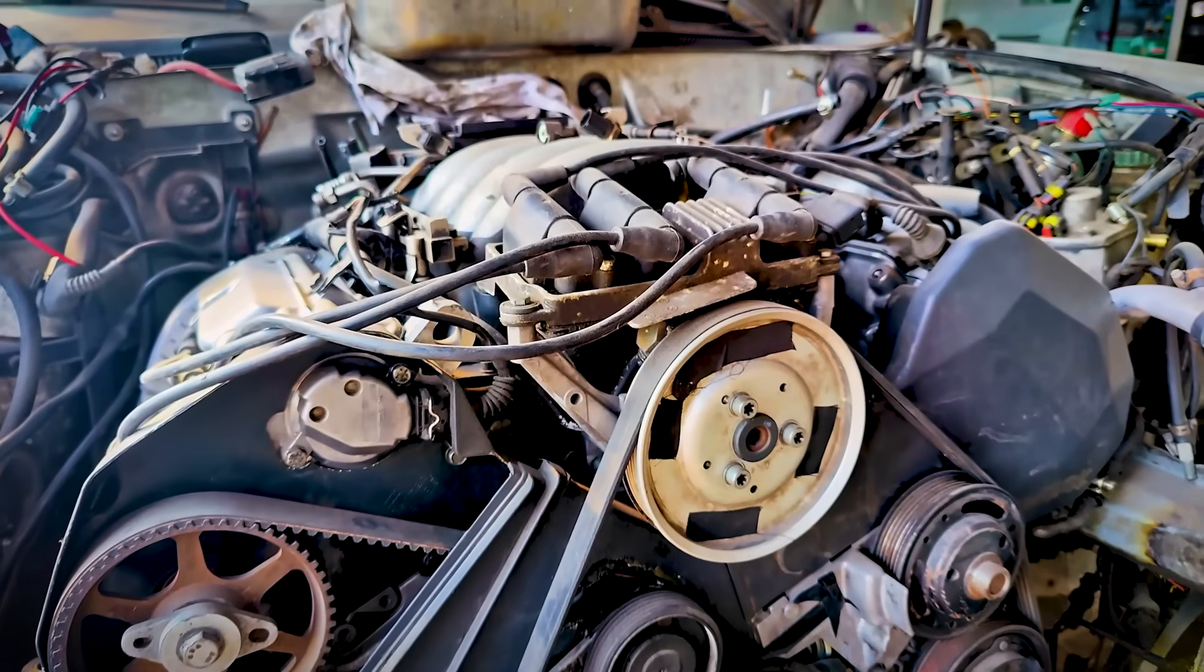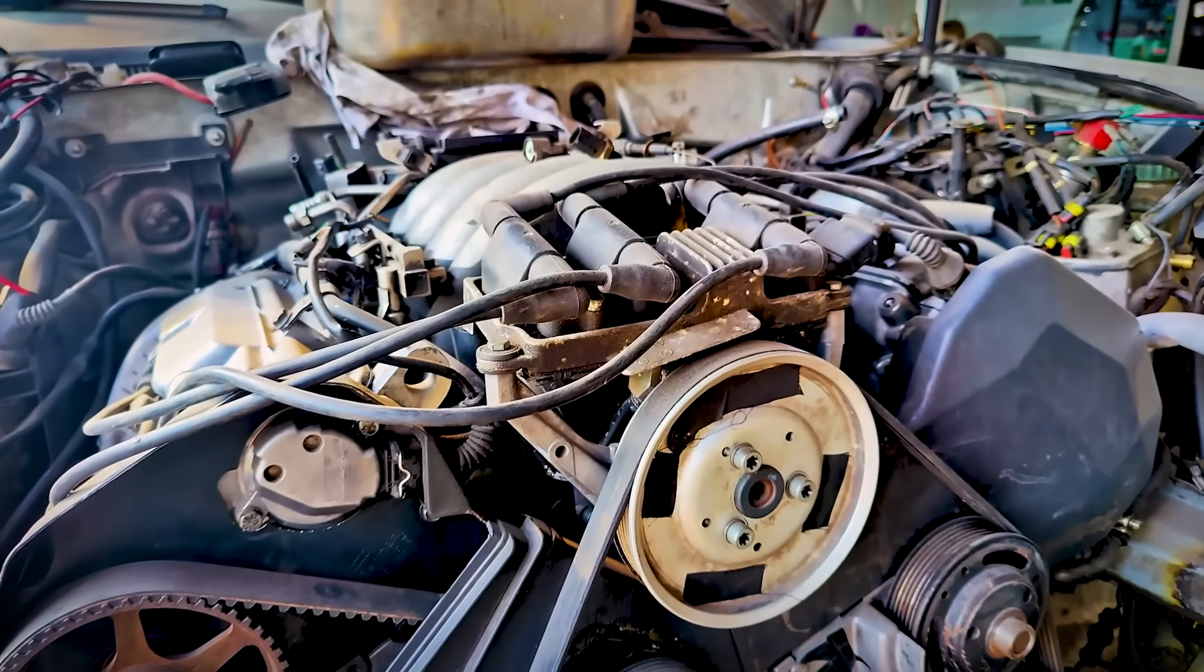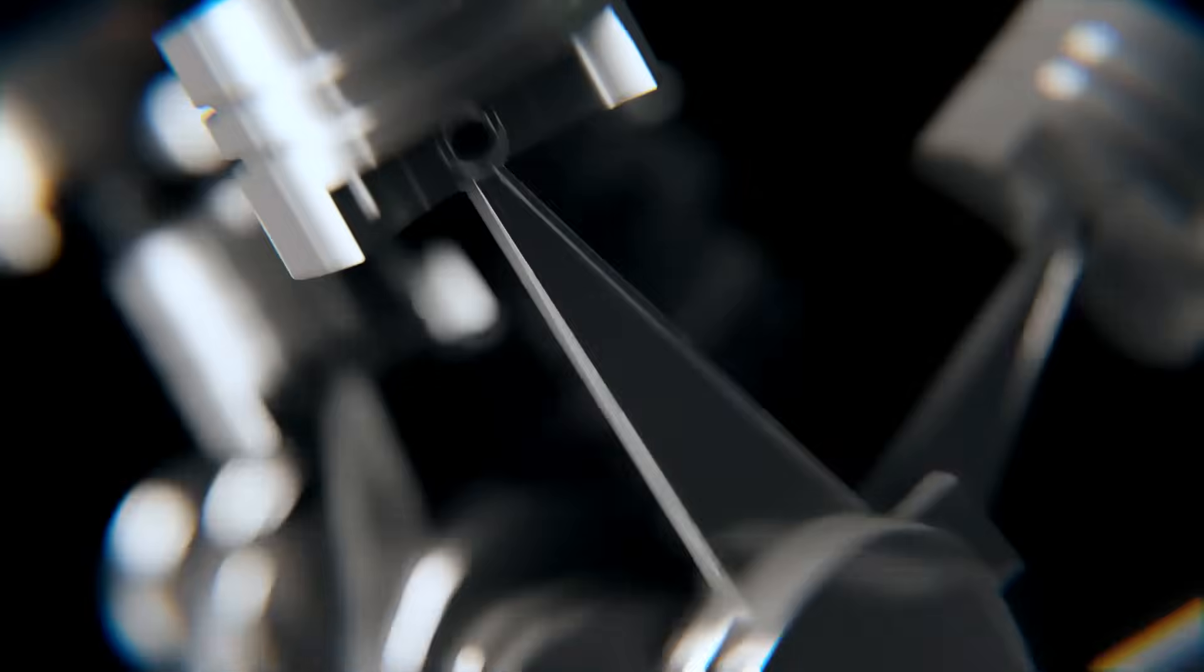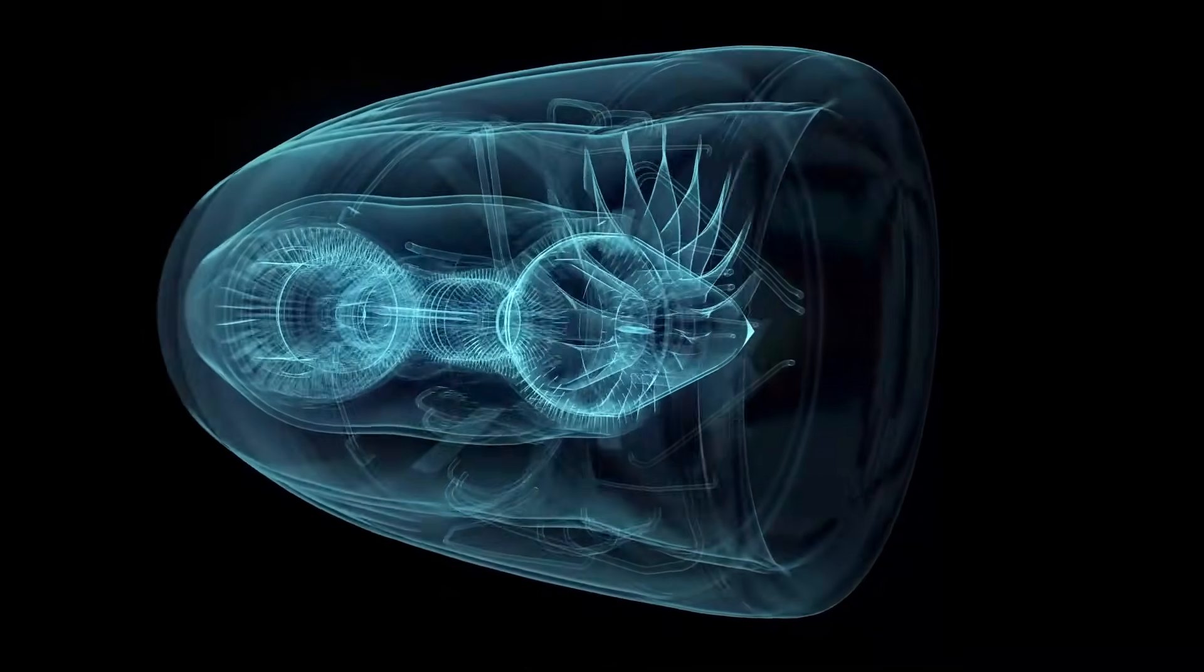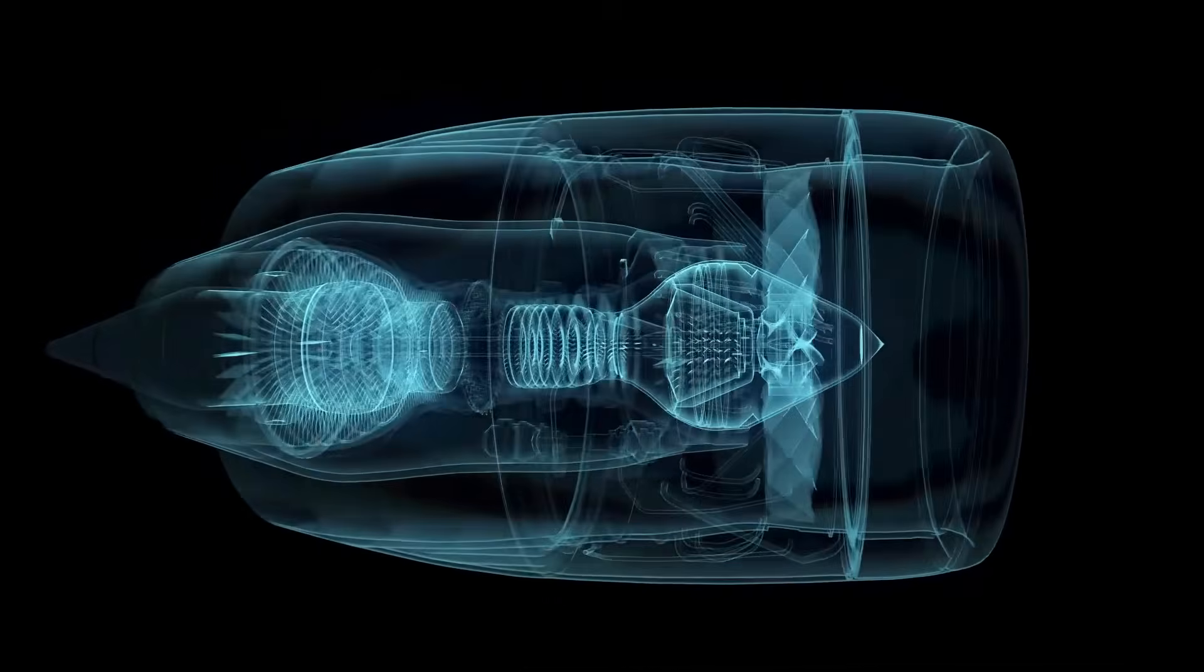A jet engine performs a similar function to the piston engine in a car, but works differently. Instead of igniting the fuel intermittently to drive pistons up and down, the jet engine burns fuel continuously to maintain a stream of hot gases.